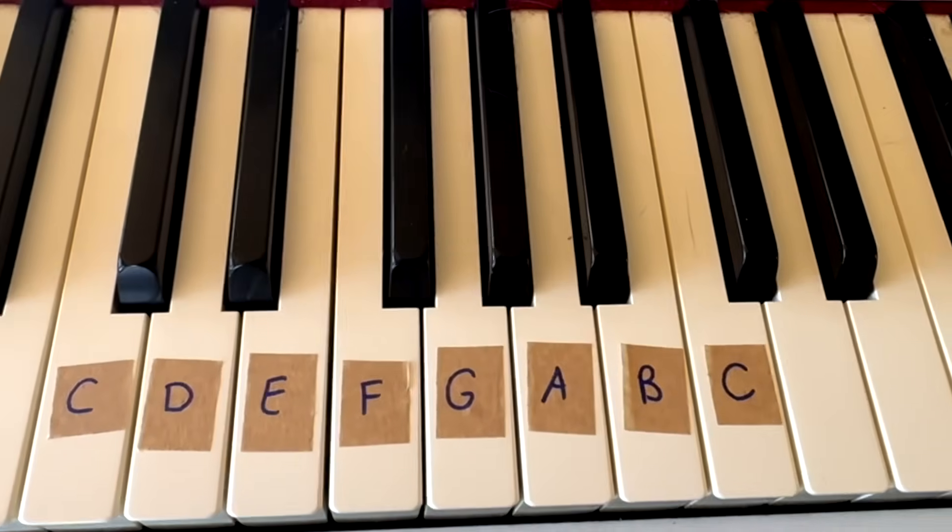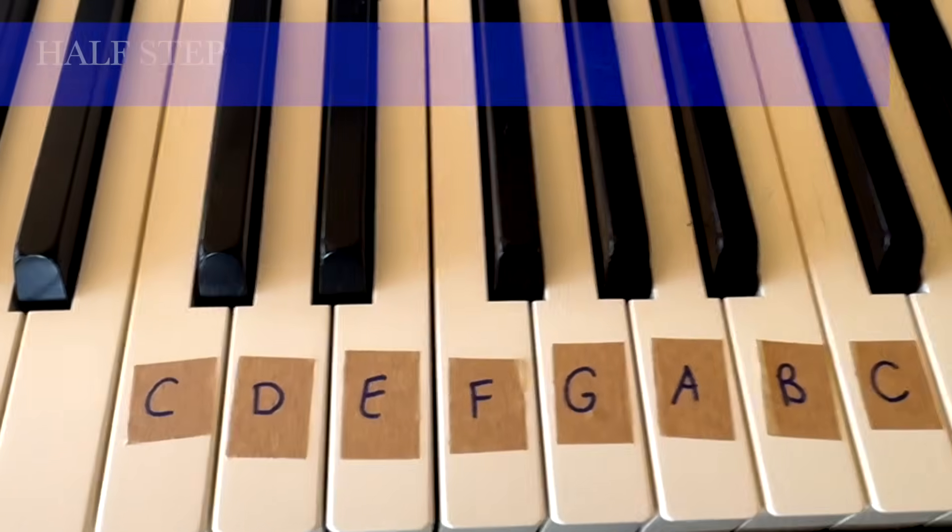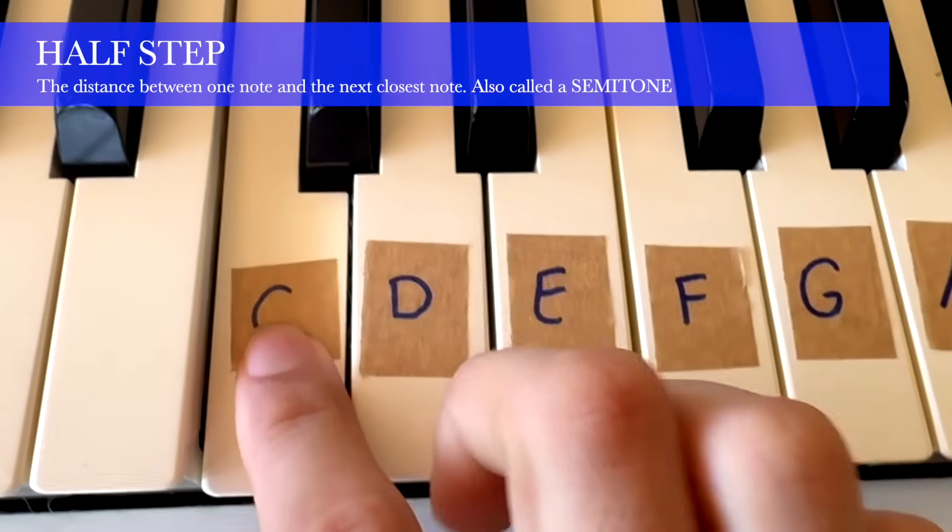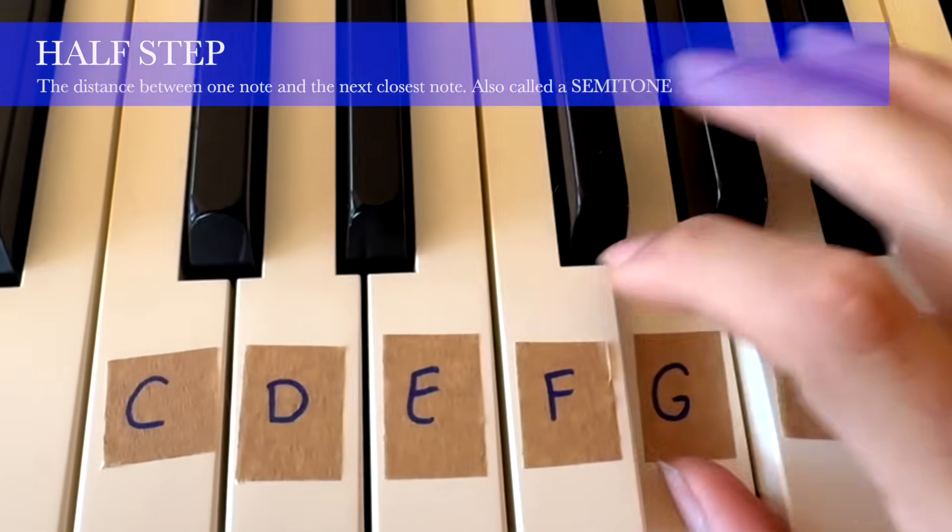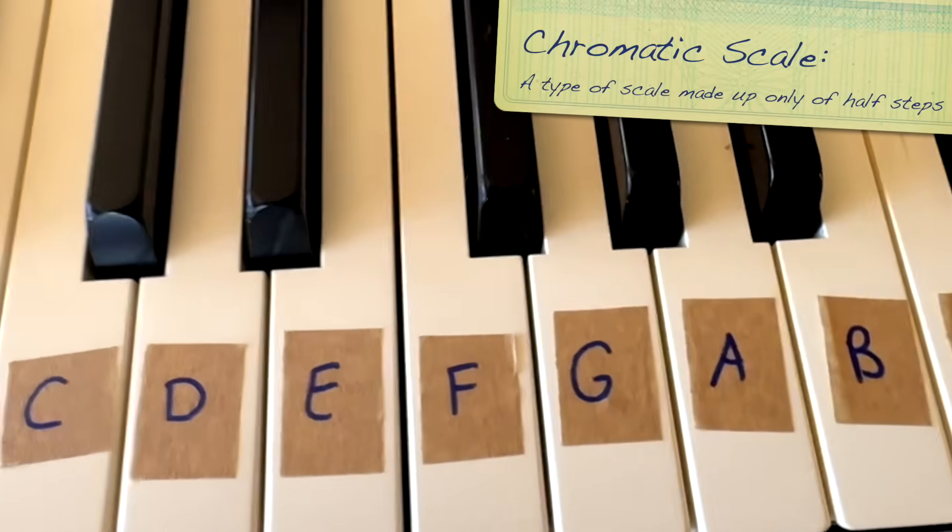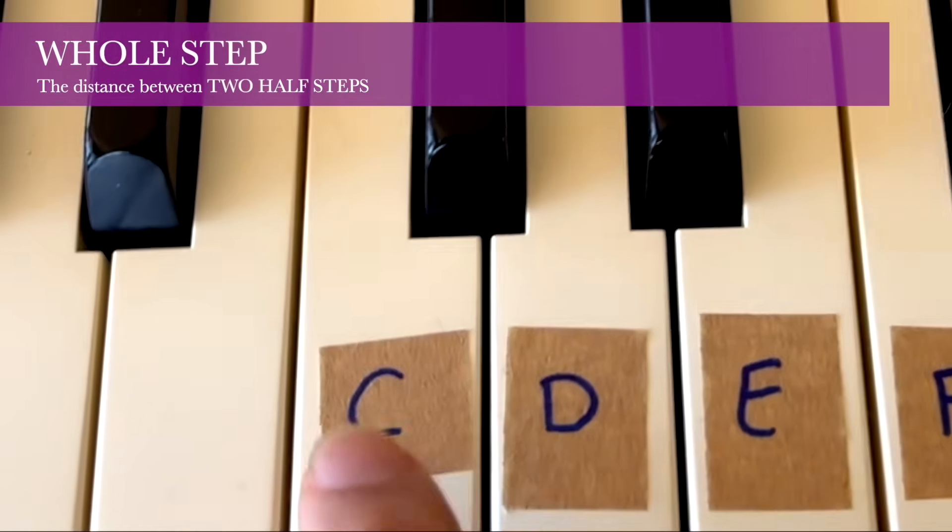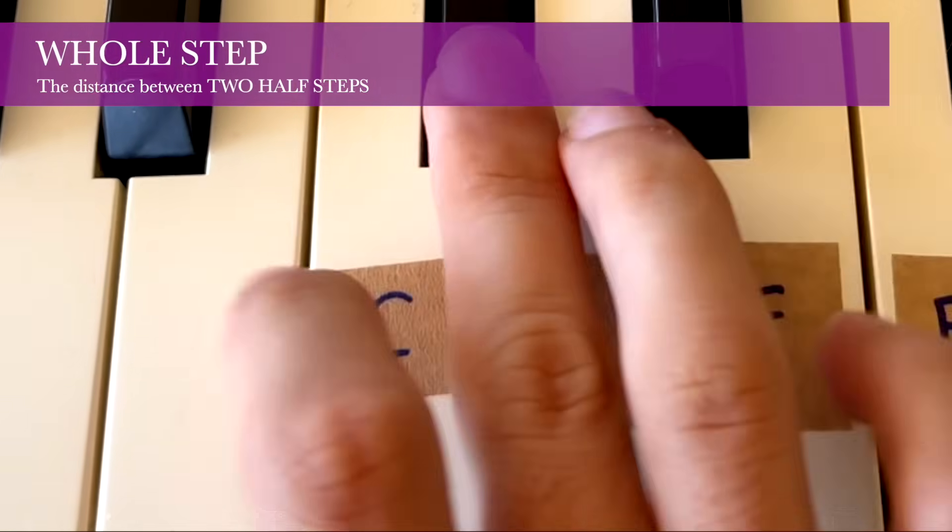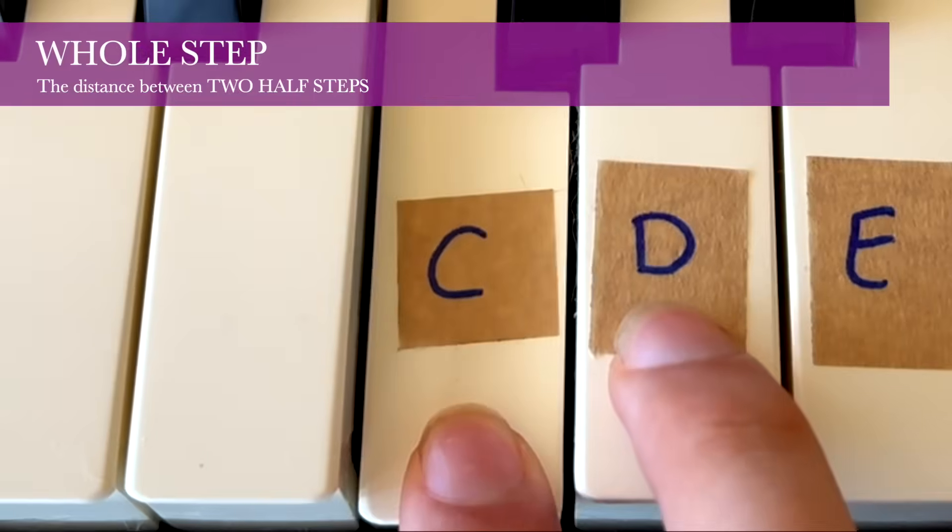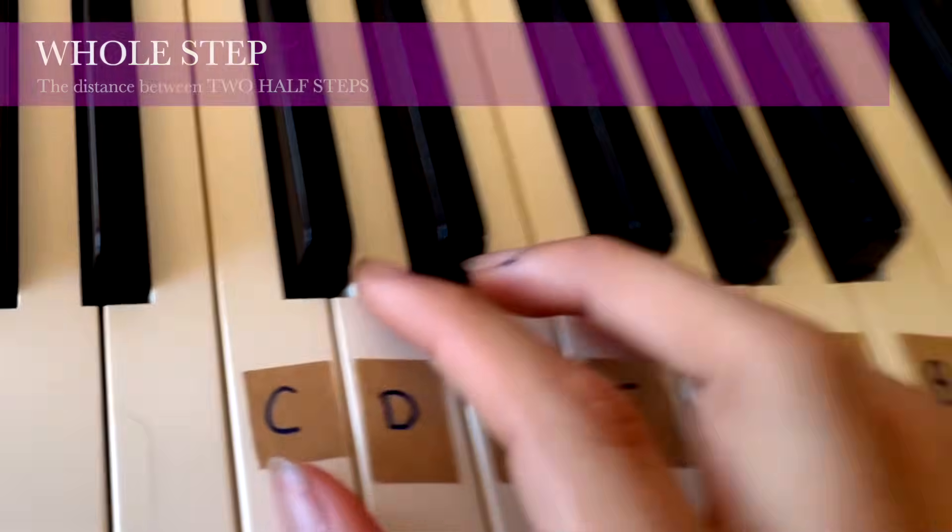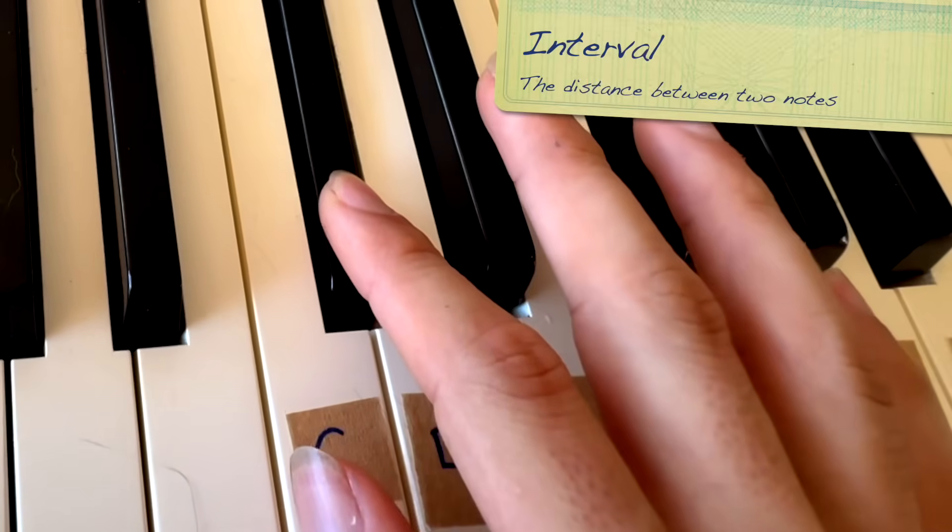The major scale sounds the way it does because of something called half steps and whole steps. A half step is the distance between a note and its next closest neighbor. And if you keep going up in half steps, you get something called a chromatic scale. A whole step is the distance between two half steps. So if I take C and go up a half step and go up another half step, we get the note D, and so C to D is a whole step.